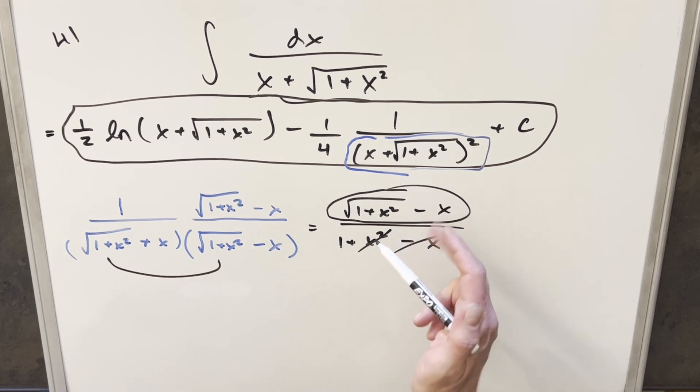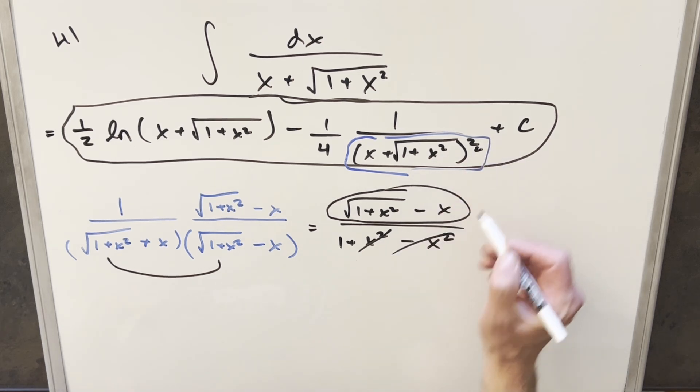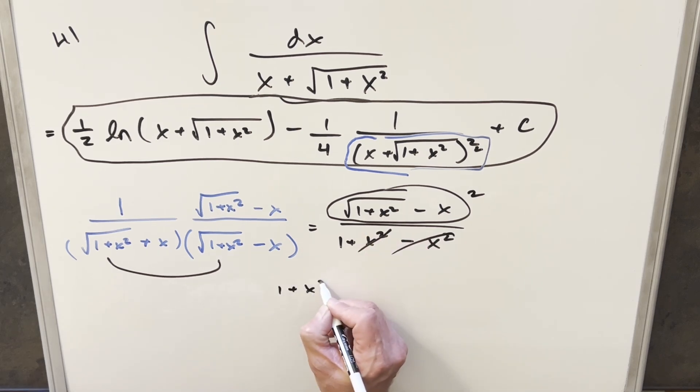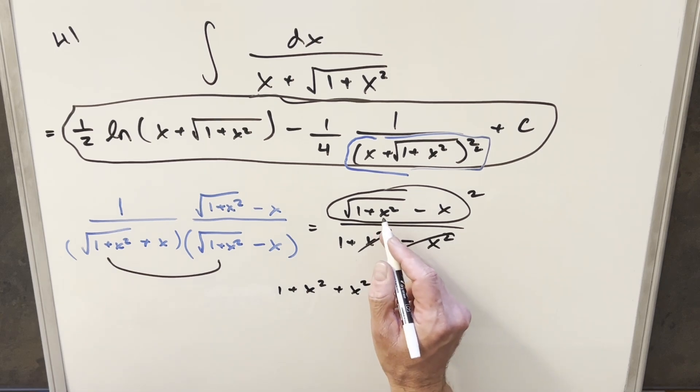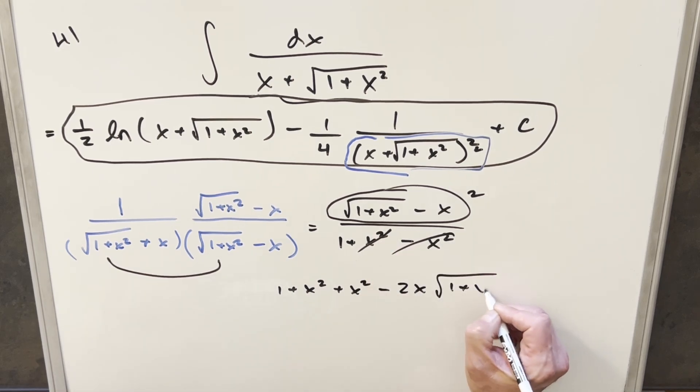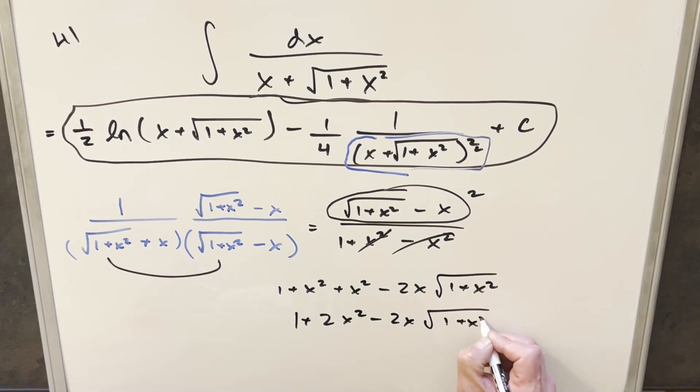And now the only thing we need to do if we're plugging this back in is this whole thing here. This is squared. So I actually need to square this. So if we do that, we square the first term, we're going to get 1 plus x squared here. Squaring the second term, we get a plus x squared. Middle terms, we'll have minus 2x square root 1 plus x squared. I can reduce this a little bit and put these together. So 1 plus 2x squared minus 2x square root 1 plus x squared.